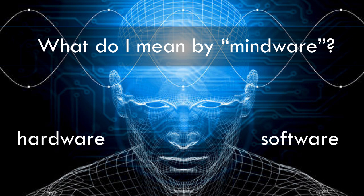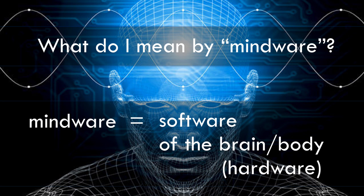One way the term mindware has been used in cognitive science and the philosophy of mind is to suggest a theory of what the mind is and how it relates to the brain and body. The theory is that everything we associate with the properties and activities of minds — thinking, feeling, perceiving, believing, desiring, imagining, reasoning, and so on — is best understood as a kind of information processing activity carried out by our physical brains and bodies. Mental activity is a kind of computational activity implemented in the hardware of our brains and bodies. When the term mindware is used in this context, it's often referring to a conception of the mind called computational functionalism, or the computational theory of the mind.